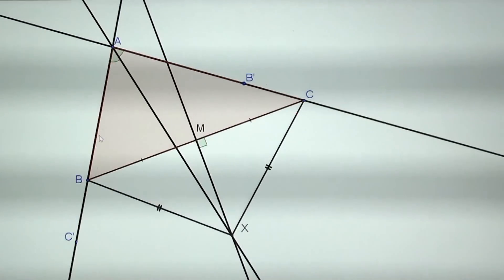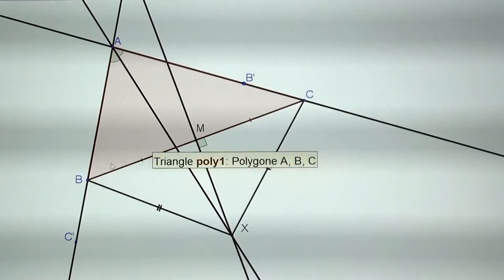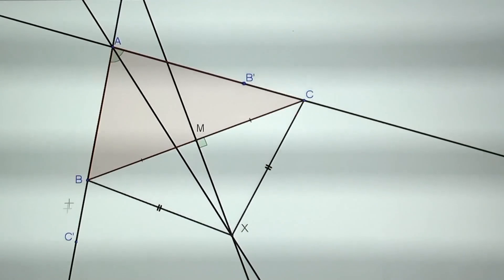But also because AB is shorter than AC, AB prime being the same length as AB, we get that B prime is in between A and C. And on the other side, because AC is longer than AB, C prime should be on AC prime and not the opposite.